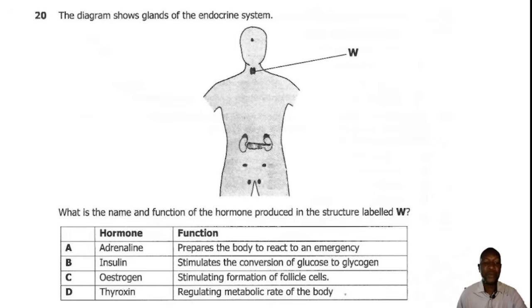Question 20. The diagram shows glands of the endocrine system. What is the name and function of the hormone produced in structure W? W is the thyroid gland and the thyroid gland produces the hormone thyroxine, which is in charge of controlling the basal metabolic rate. So the correct answer is D.